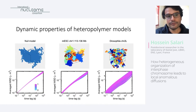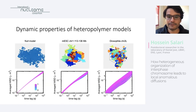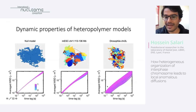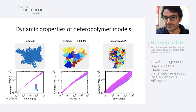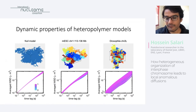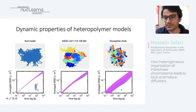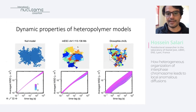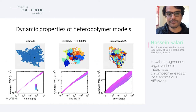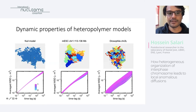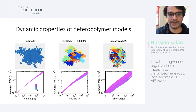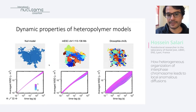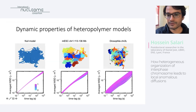In order to find the dynamic properties of the model, we compute the average MSD — averaged over all populations and all monomers along the chain. We have this for Drosophila and for mouse ESC. As a reference, we also simulate a null model with no interactions, to see the effect of the heterogeneous structure in the heteropolymer model.